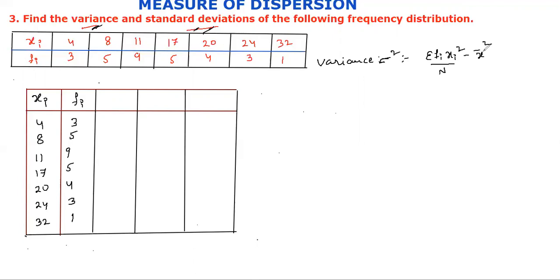Here, x̄ is the mean. We will draw the mean formula. x̄ is actually the mean, and we need to find the mean first before computing the variance.